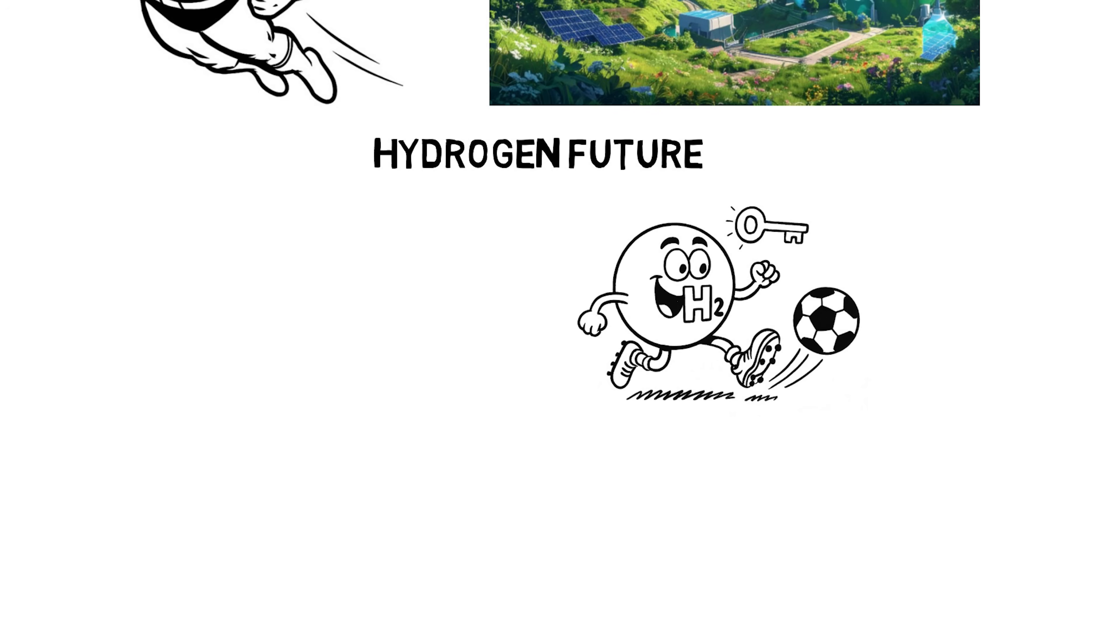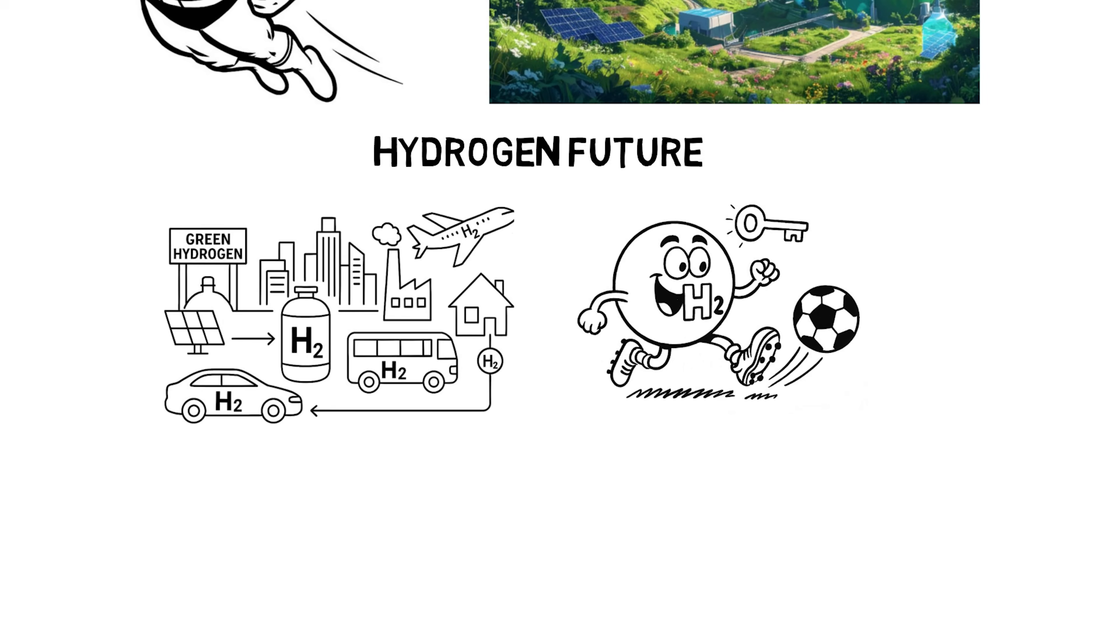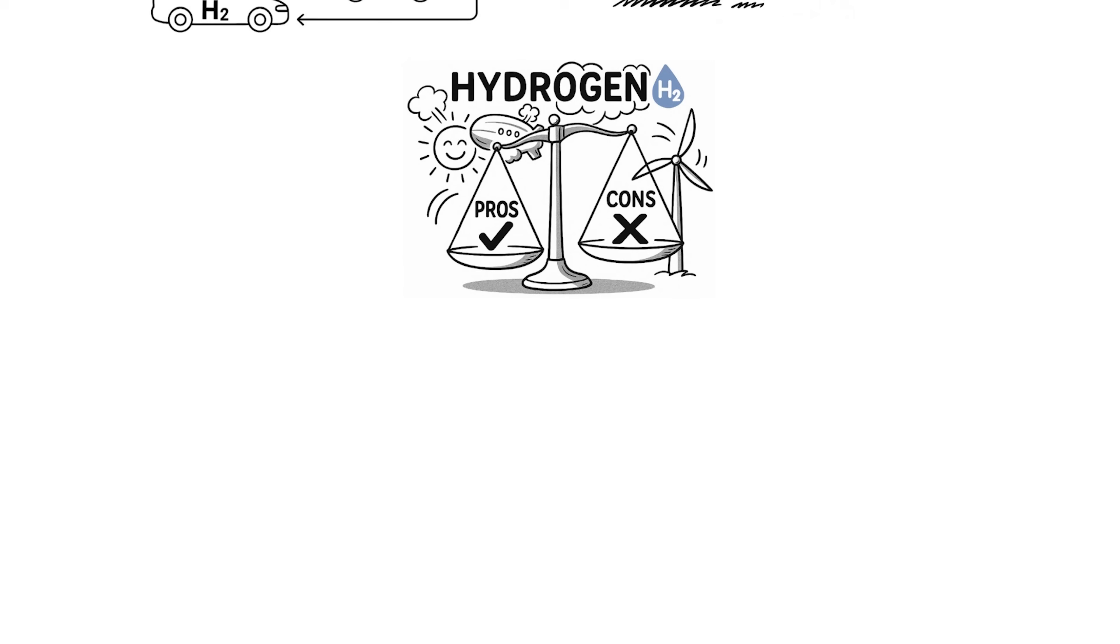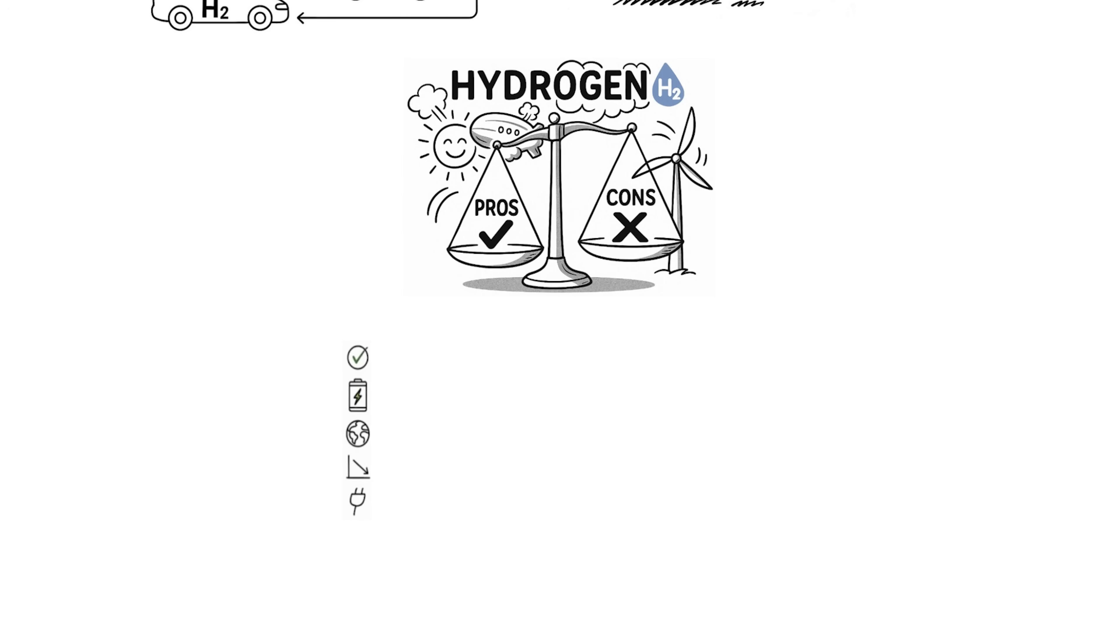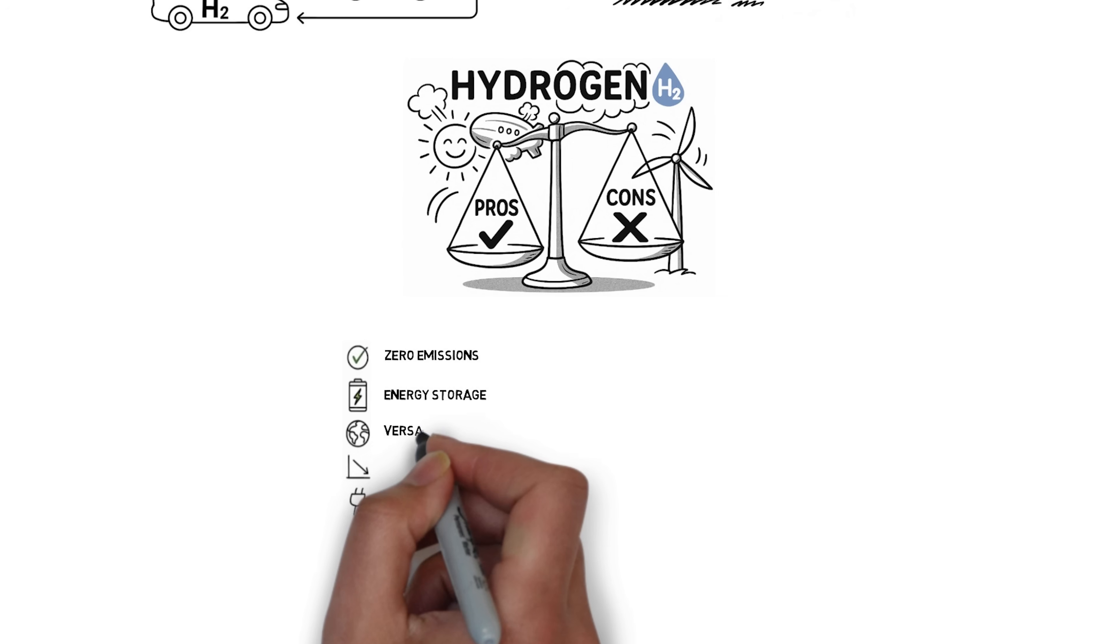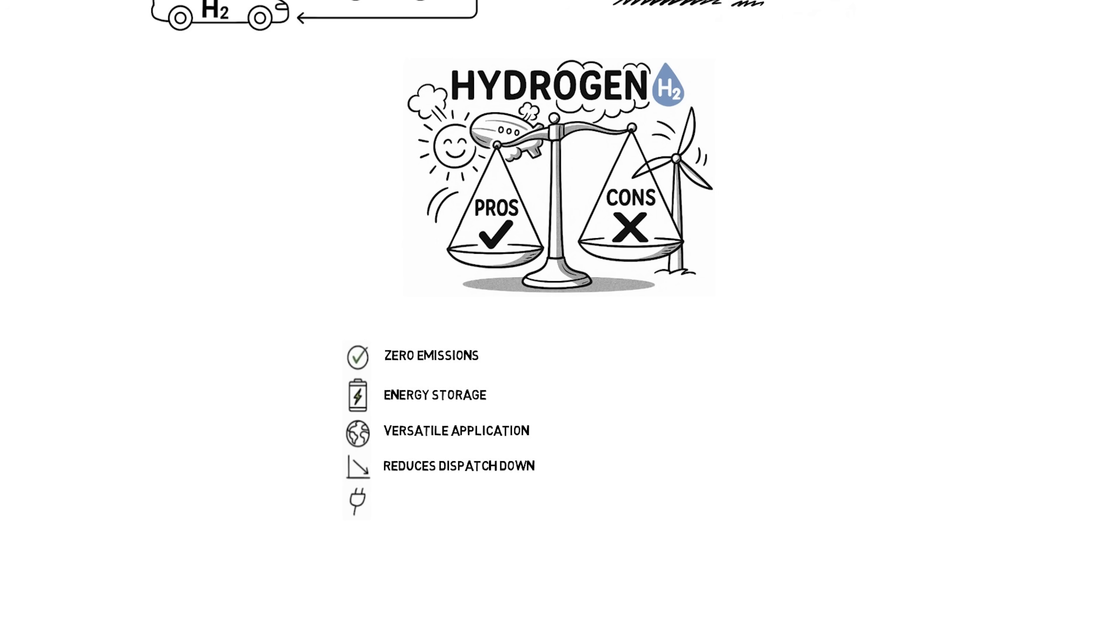Hydrogen is emerging as a key player in the clean energy transition. But what makes it so promising and what challenges does it face? Let's start with the pros. Hydrogen produces zero emissions at the point of use, just water vapor and heat. It's a powerful way to store excess energy from renewables like wind and solar, helping stabilize the grid. Its versatility is unmatched. Hydrogen can power vehicles, heat buildings, and support industries from agriculture to manufacturing. And when integrated wisely, hydrogen systems can reduce overall energy costs and boost efficiency.